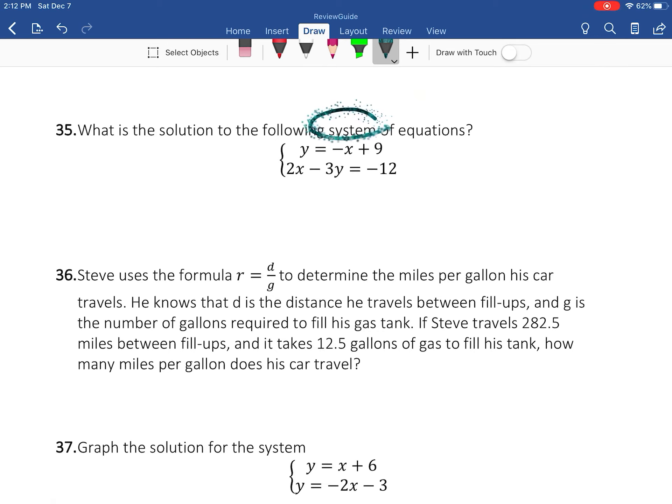Number 35, what is the solution to the following system? So I'm going to take this value here that's already solved for us and plug it in for y. So I'm going to say 2x - 3 times (-x + 9) = -12.